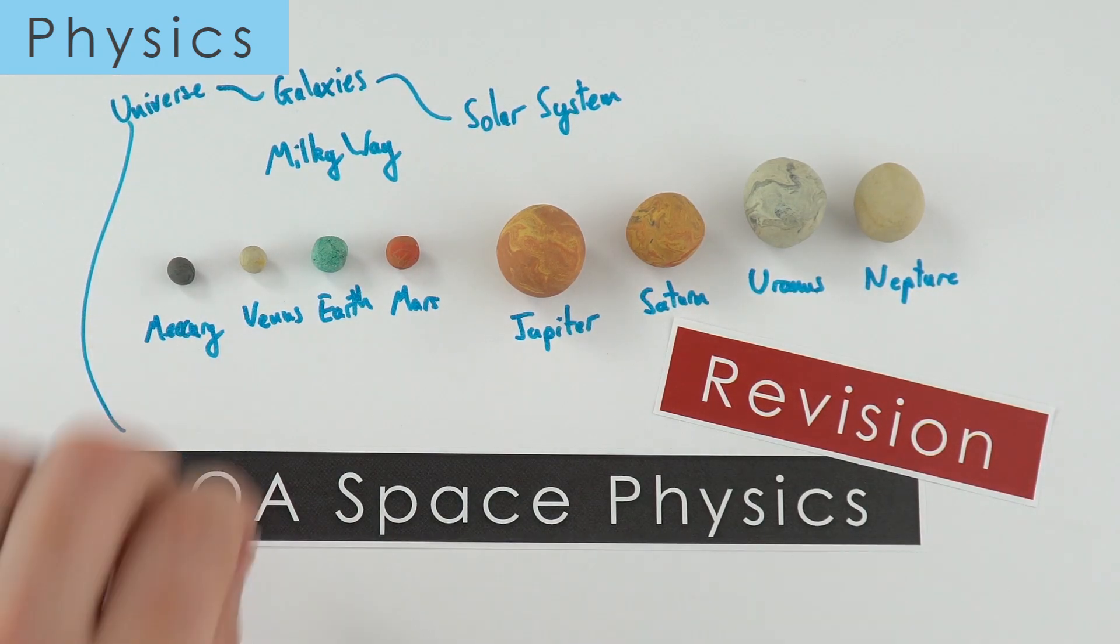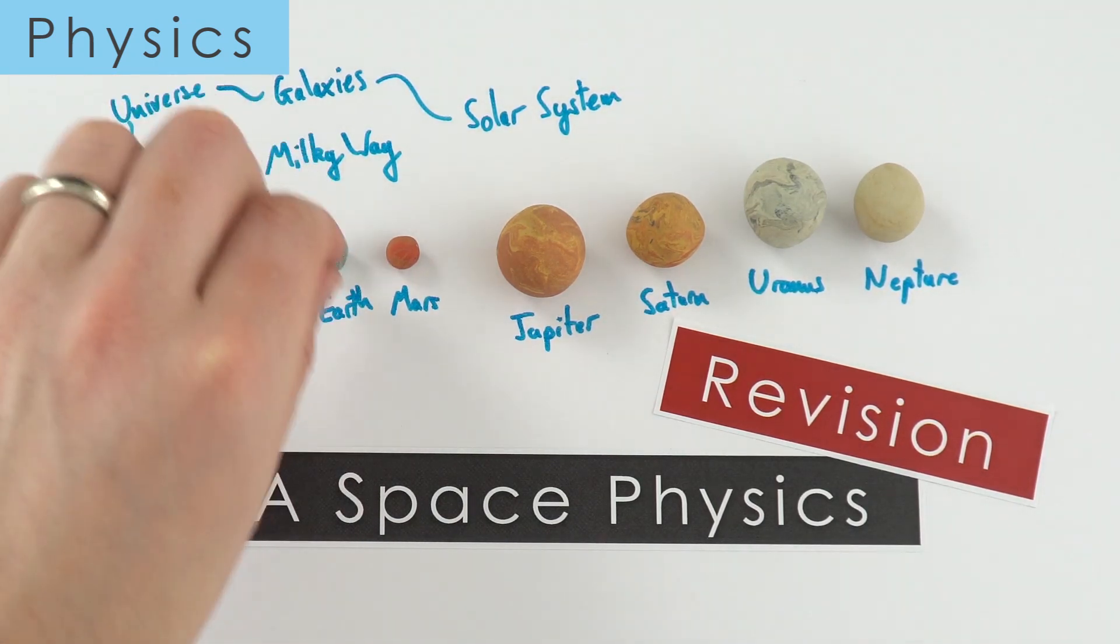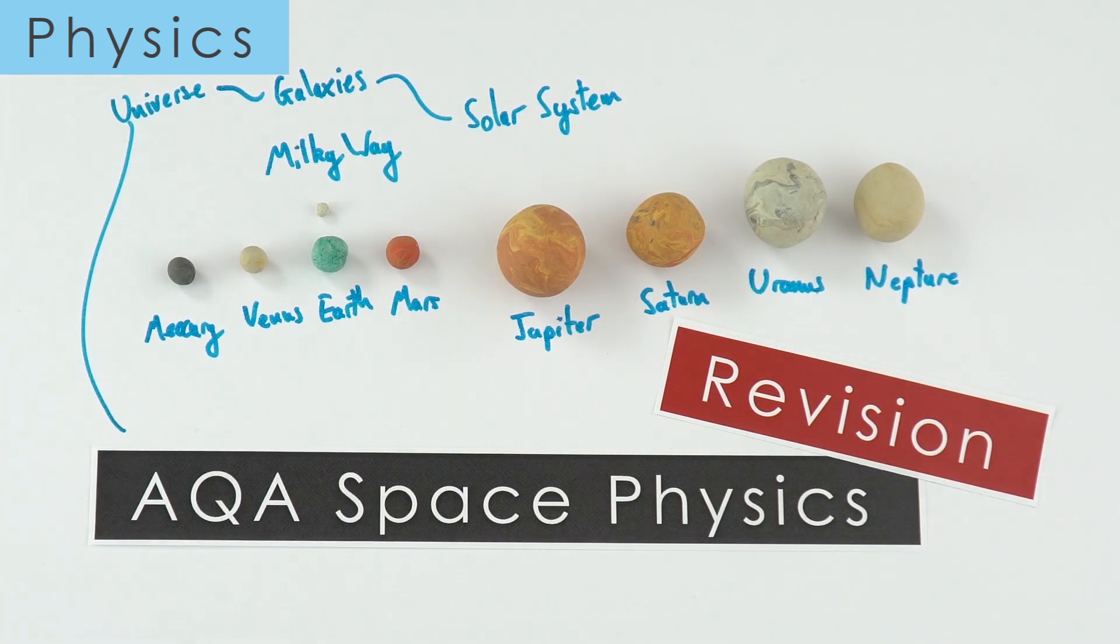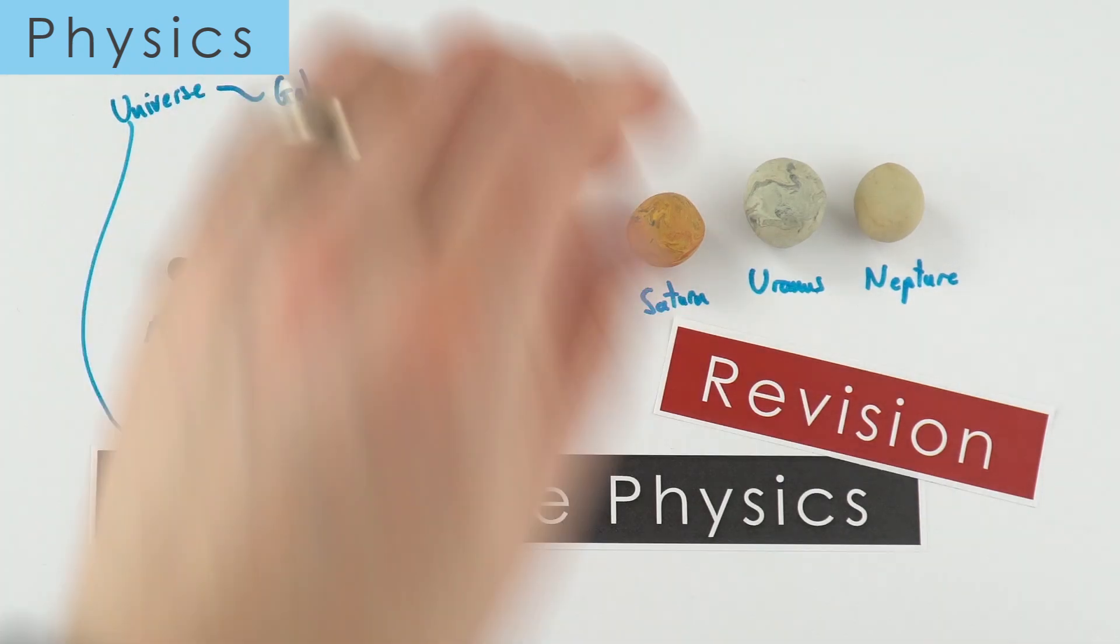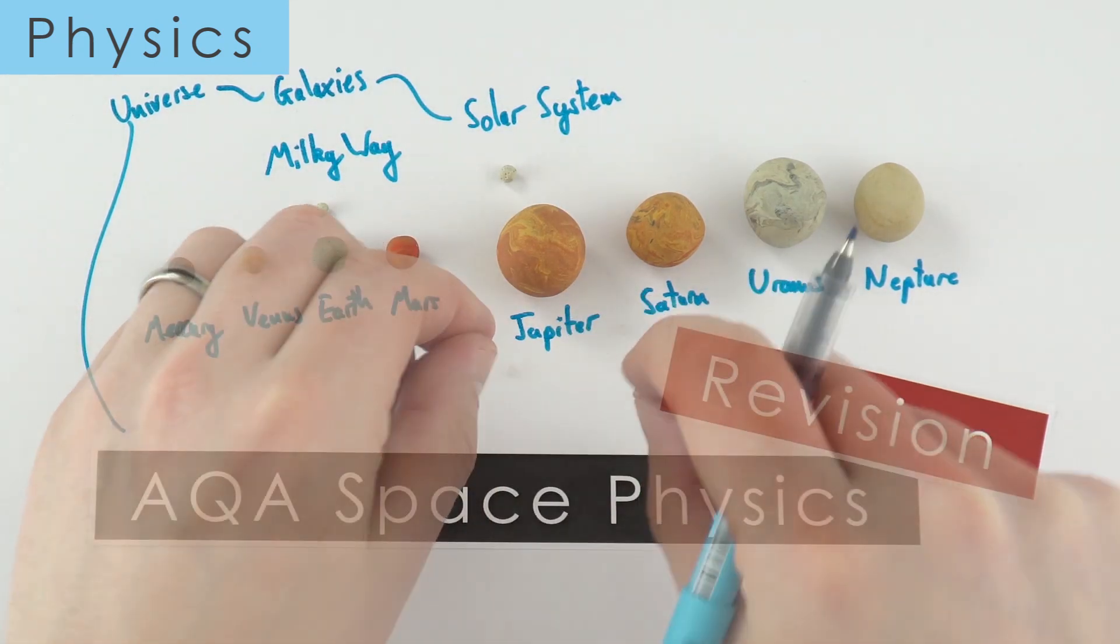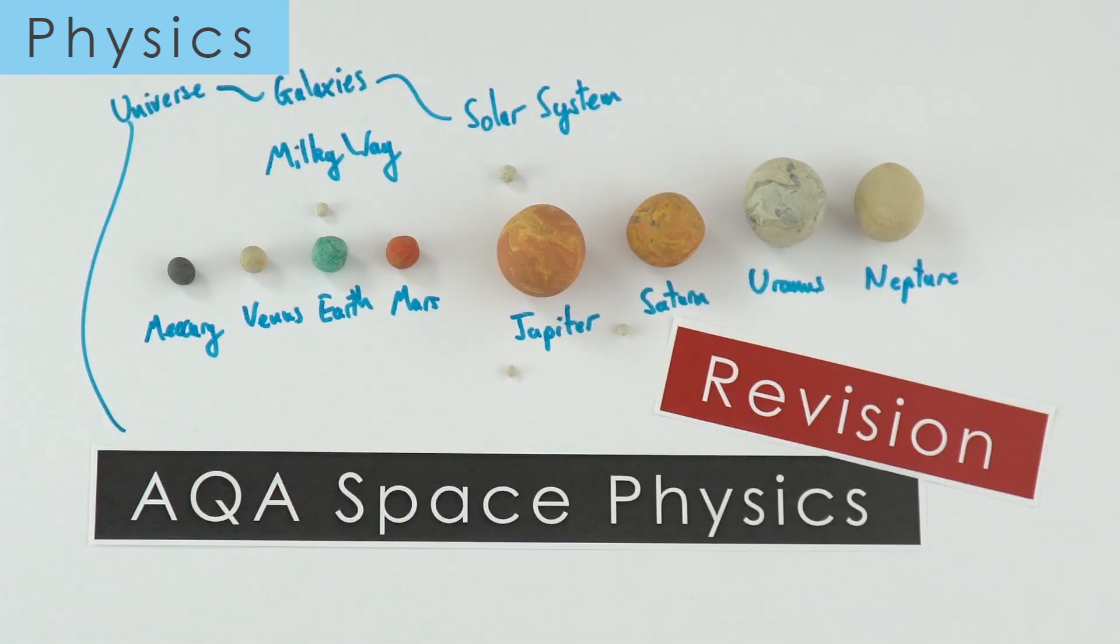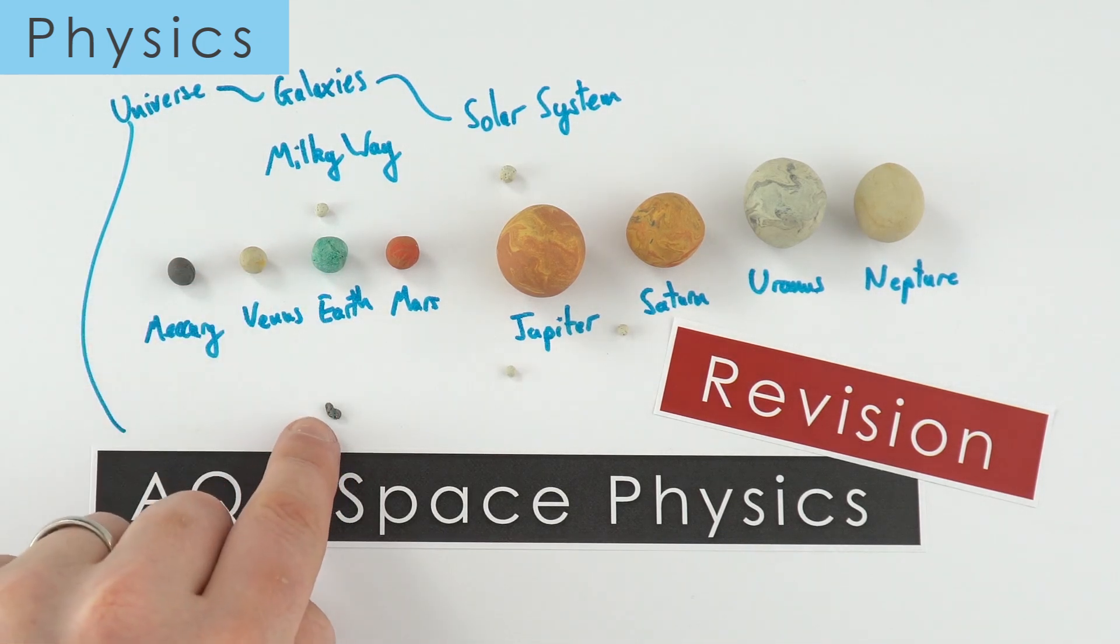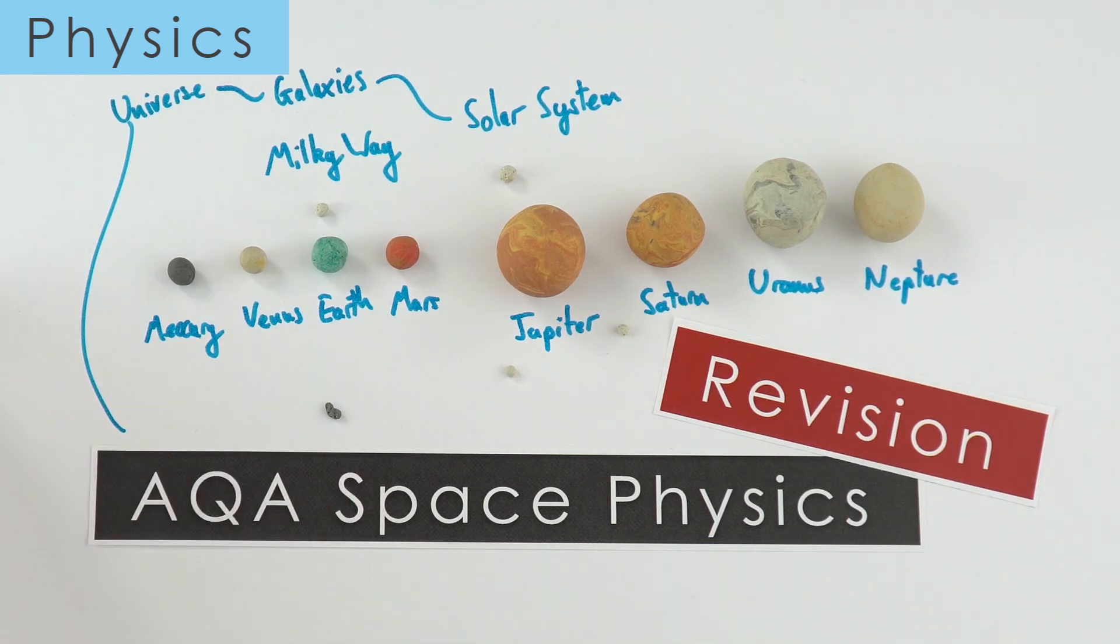Now in addition to these eight planets, what we have are a number of moons. Going around the earth we have our natural satellite, our moon, but don't forget that these other planets have their own moons as well. These moons are orbiting their planet. We also have comets and asteroids which maybe have a more elliptical orbit around the sun.